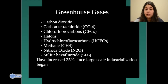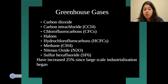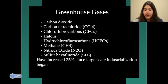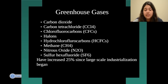Different greenhouse gases include carbon dioxide, carbon tetrachloride, chlorofluorocarbons, halons, hydrochlorofluorocarbons (HCFCs), methane, nitrous oxide (N2O), and sulfur hexafluoride. I'll provide a link in the description for the different sources of these gases. They are accountable for ozone depletion, increasing greenhouse gases, and increasing global warming. These have increased 25% since large-scale industrialization began.